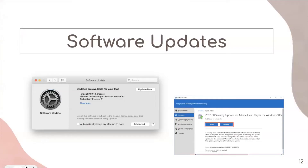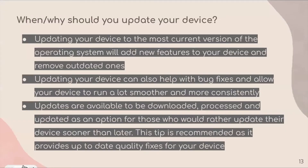Another issue you may be experiencing is software updates, and they come in different forms depending on which device you have. The screenshot to the left is on a Mac device and the one to the right is on a Windows device — you'll see different screens depending, but it is the same concept. Updating your device to the most current version of the operating system will add new features, remove outdated ones, help with bug fixes, allow your device to run smoother and more consistently, and may even improve the speed of your device.